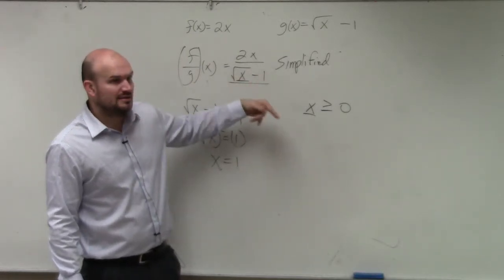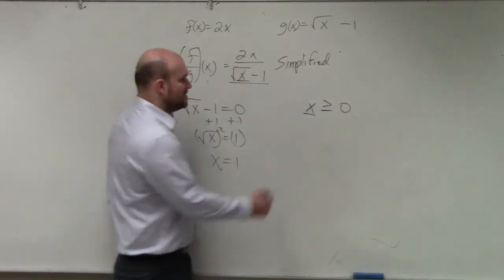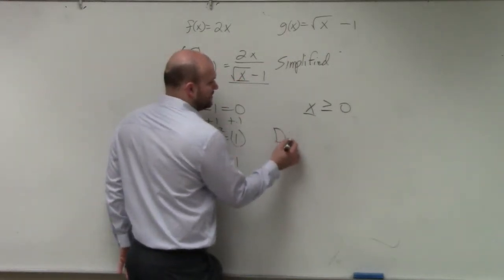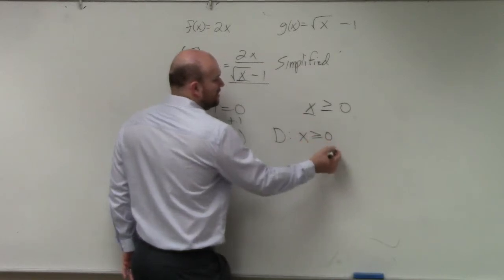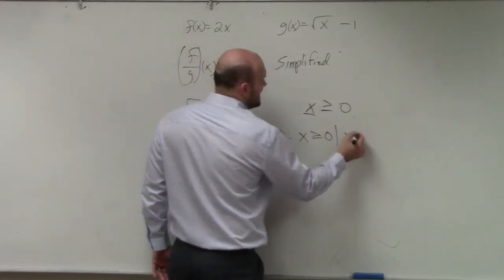0. 0 minus 1 is negative 1. So that works. So the domain is going to be all values of x greater than or equal to 0. However, such that x cannot equal 1.